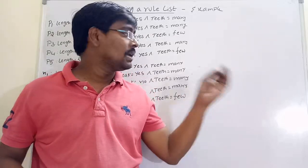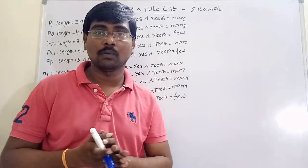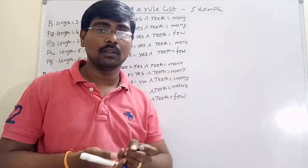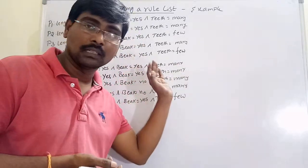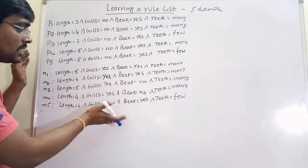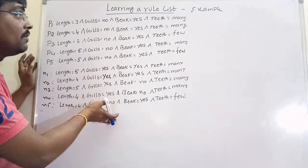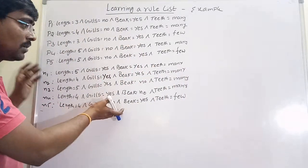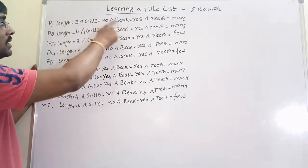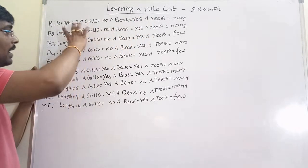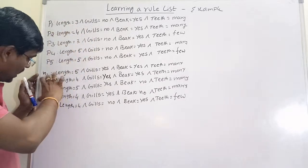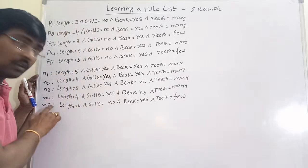Welcome to our channel. In the previous session we discussed ordered rule lists — how to create a learning ordered rule list. Now based on that concept we will consider an example and construct a rule list. The given dataset contains four parameters: length, gills, bake, and teeth — four features — with five positive instances (P1 to P5) and five negative instances (N1 to N5).